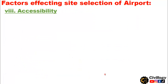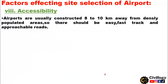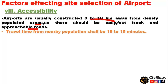The eighth point is accessibility. Airports are usually constructed 8 to 10 km away from densely populated areas. So, there should be easy, fast-track, and approachable roads. Travel time from nearby population centers should be 15 to 10 minutes.